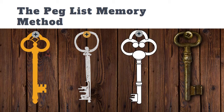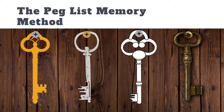In this analogy, the nails or the pegs will be animals that start with each letter of the alphabet, and those will represent each letter of the Library of Congress classification. The keys represent the subjects we want to remember.